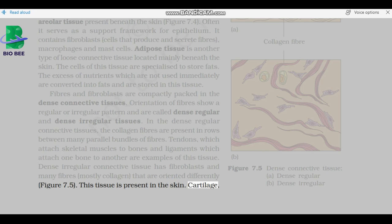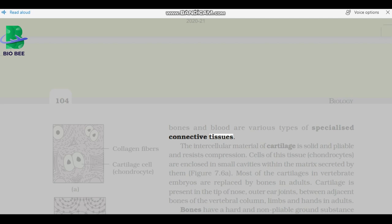Cartilage, bones and blood are various types of specialized connective tissues. The intercellular material of cartilage is solid and pliable and resists compression. Cells of this tissue, chondrocytes, are enclosed in small cavities within the matrix secreted by them. Most of the cartilages in vertebrate embryos are replaced by bones in adults. Cartilage is present in the tip of nose, outer ear joints, between adjacent bones of the vertebral column, limbs, and hands in adults.